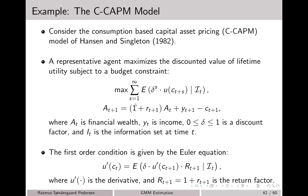The idea is to consider a representative agent that maximizes discounted lifetime utility subject to some budget constraint. Specifically, the agent is interested in maximizing the expected discounted utility of consumption for all future time points. Here, delta is a discount factor, u is a utility function, and ct denotes consumption at time t. Note that the expectation is taken conditional on some information set at time t.